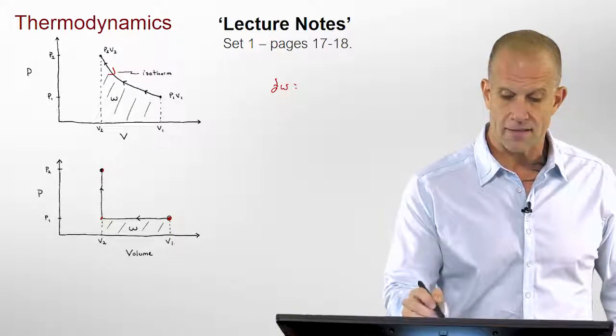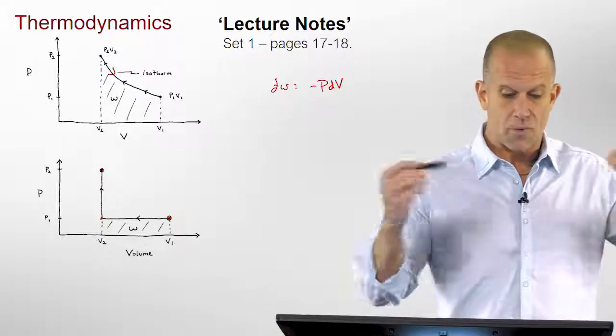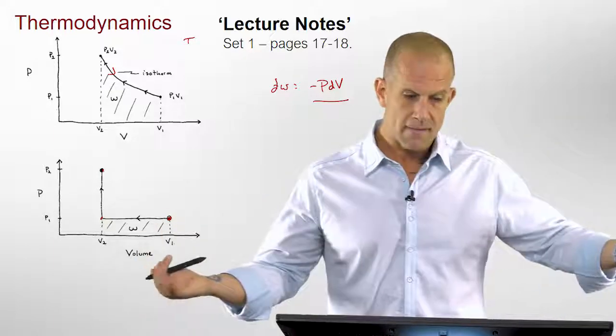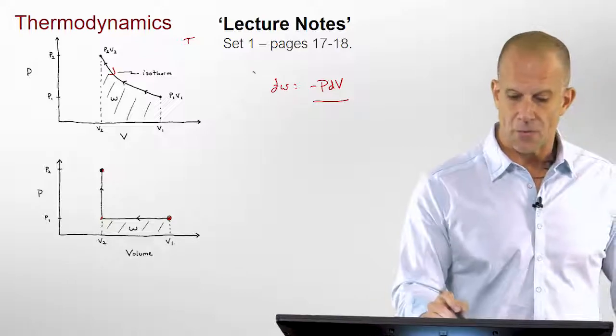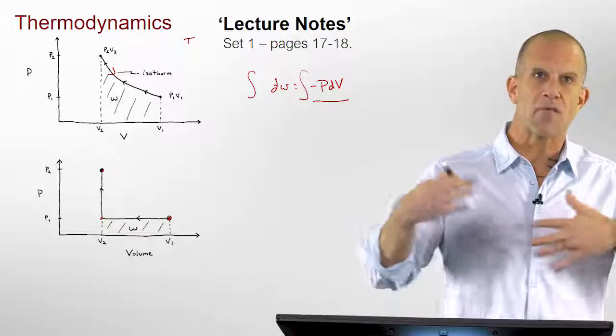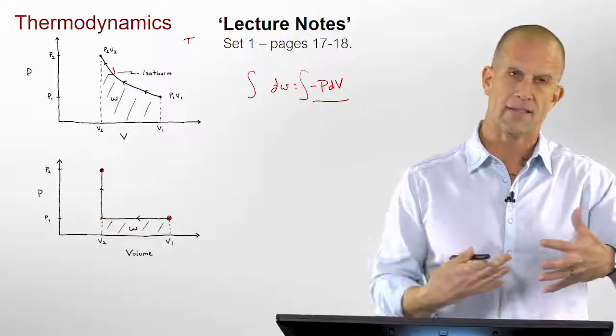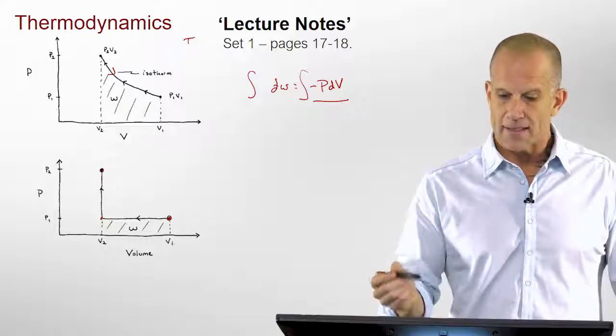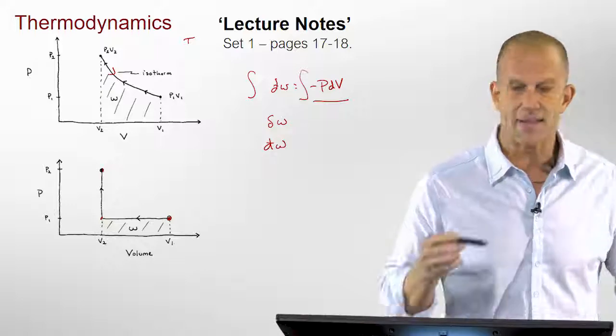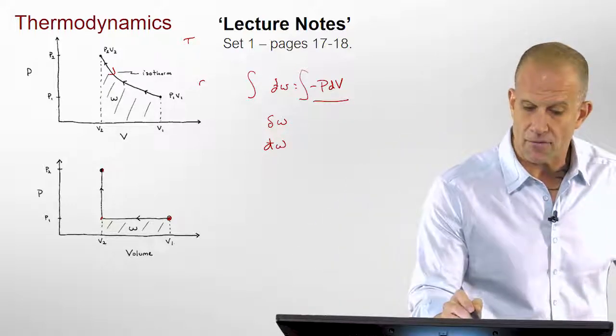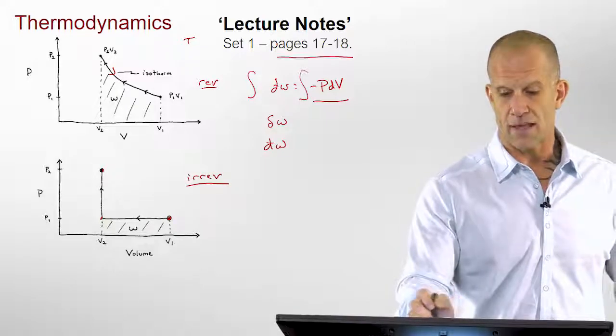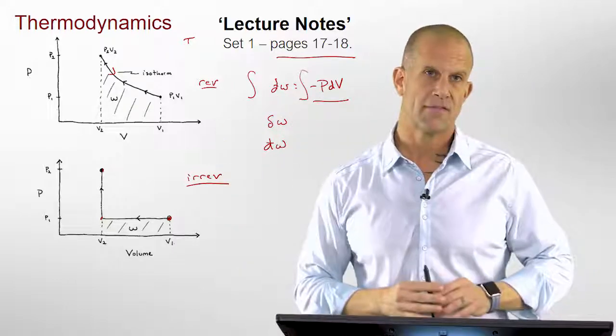The change in the work is related to, in this case where we keep temperature constant, minus PDV. And so when you integrate this, it's the integral under here, and you can see the amount of work is completely different in these cases. And it's because, as we saw before, the work, whether you state it like this or like this, is a path dependent variable. And this is doing it in a reversible sense, while this is an irreversible sense.